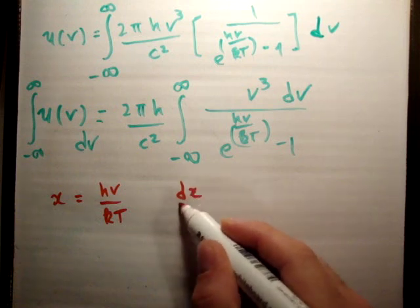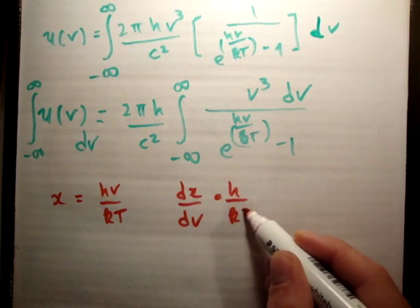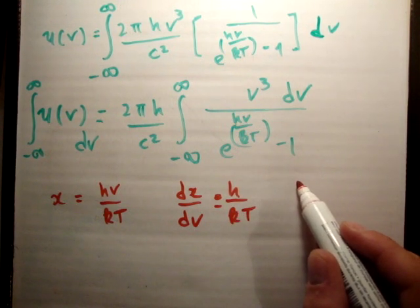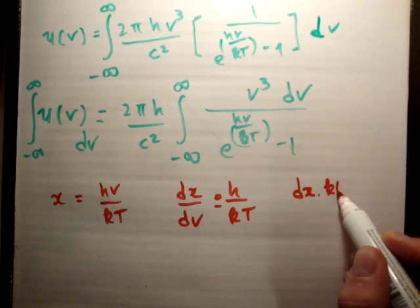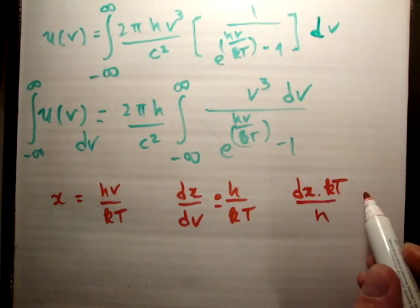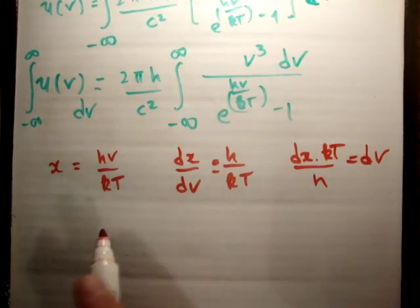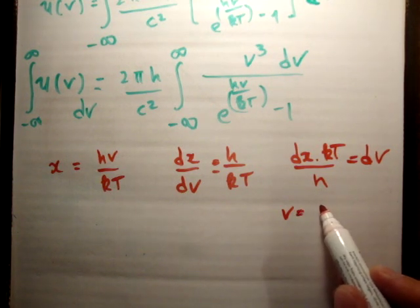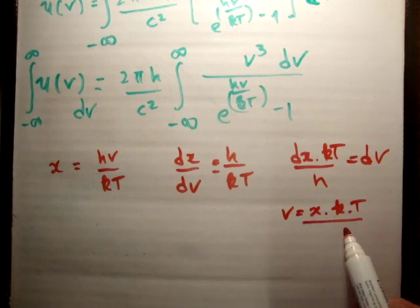Therefore dx/d nu equals h over kT, and as a result dx times kT over h equals d nu. Similarly, if you rearrange, nu equals x times kT over h.